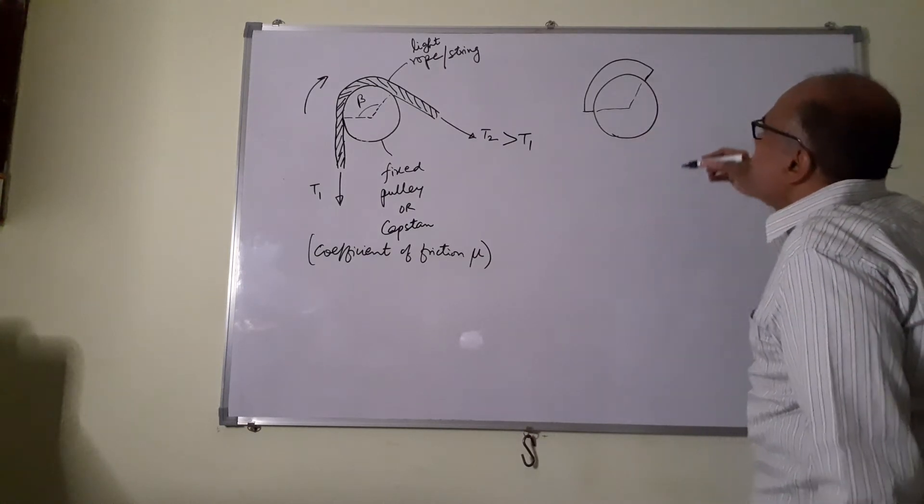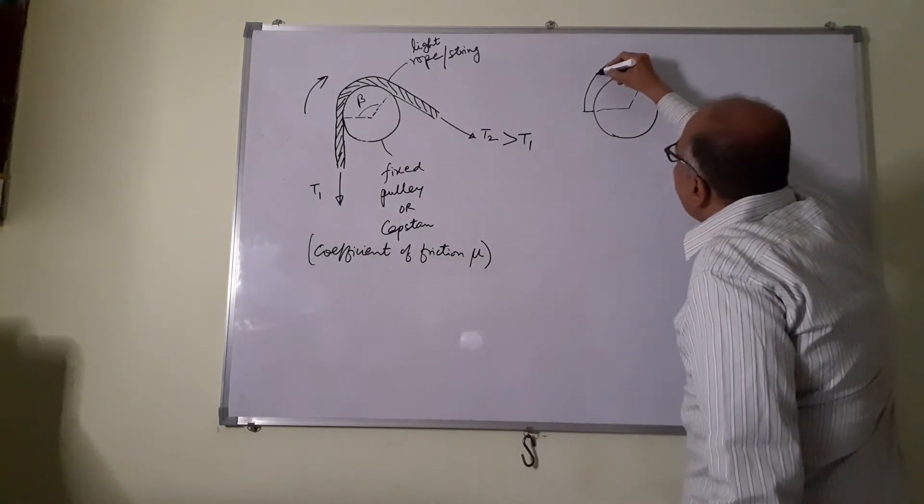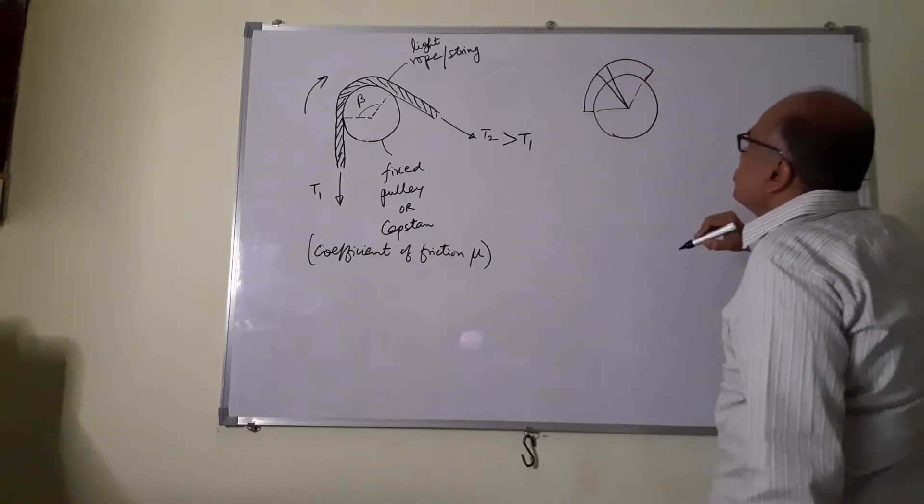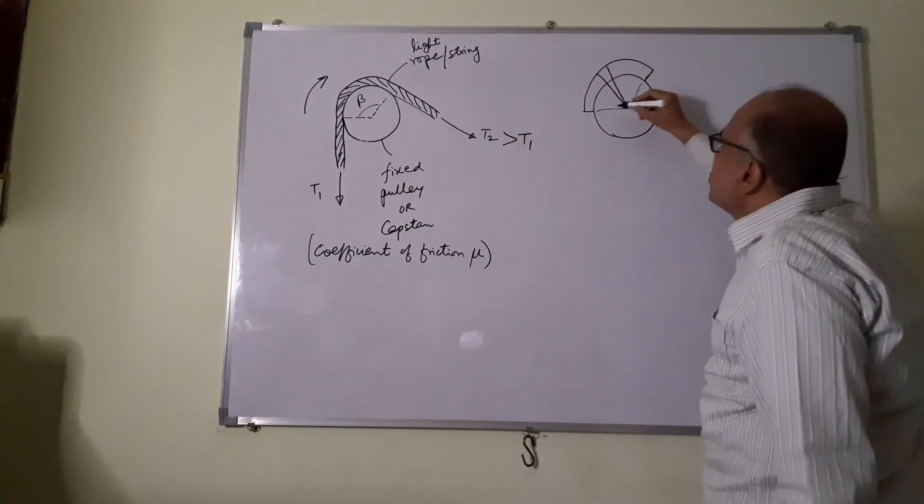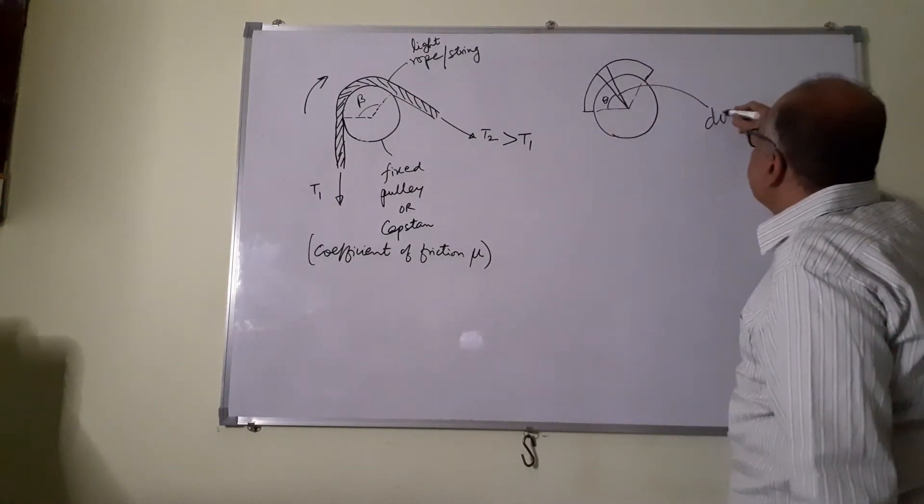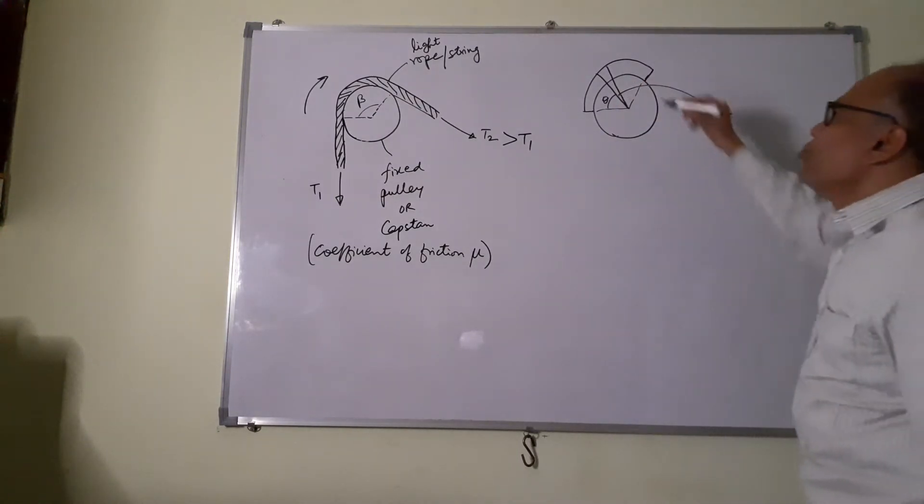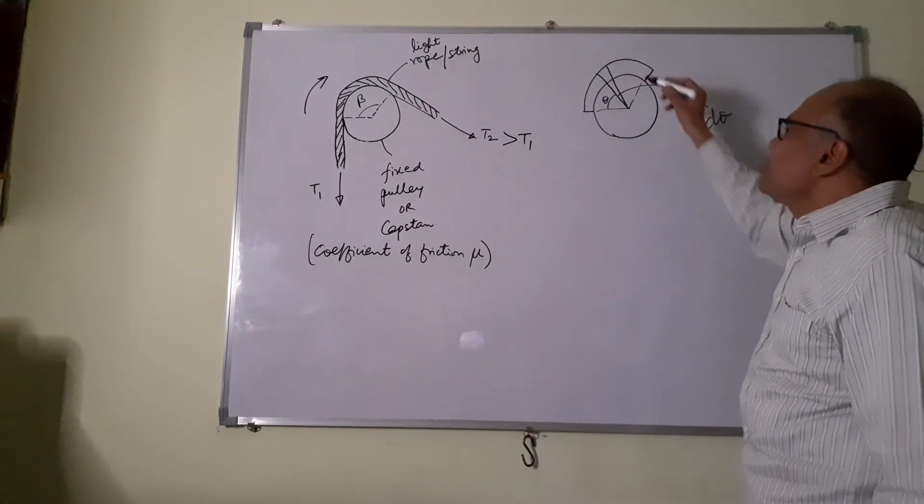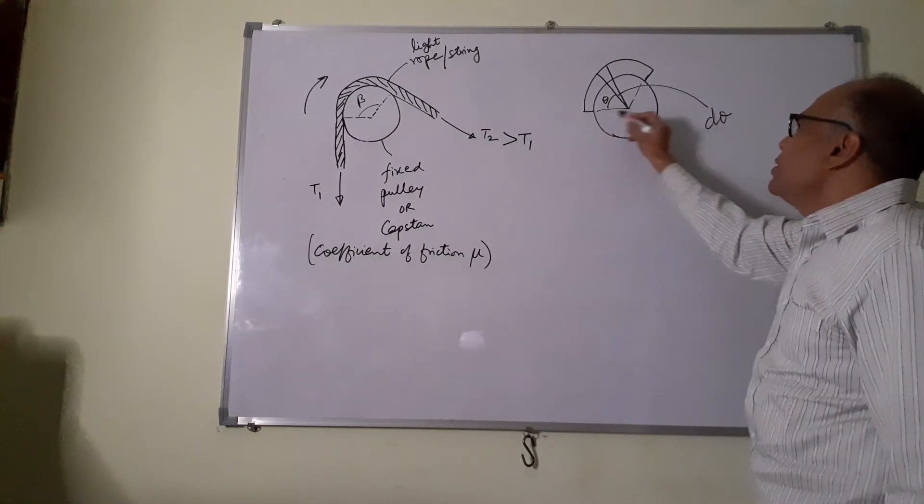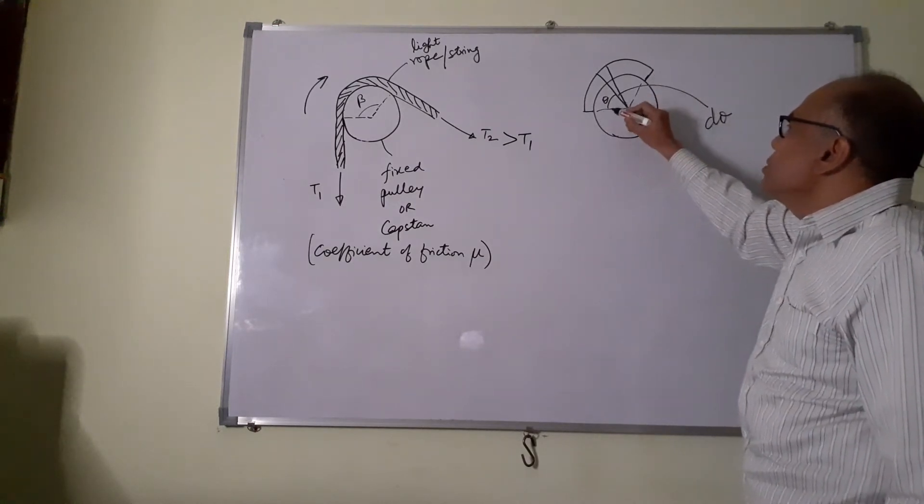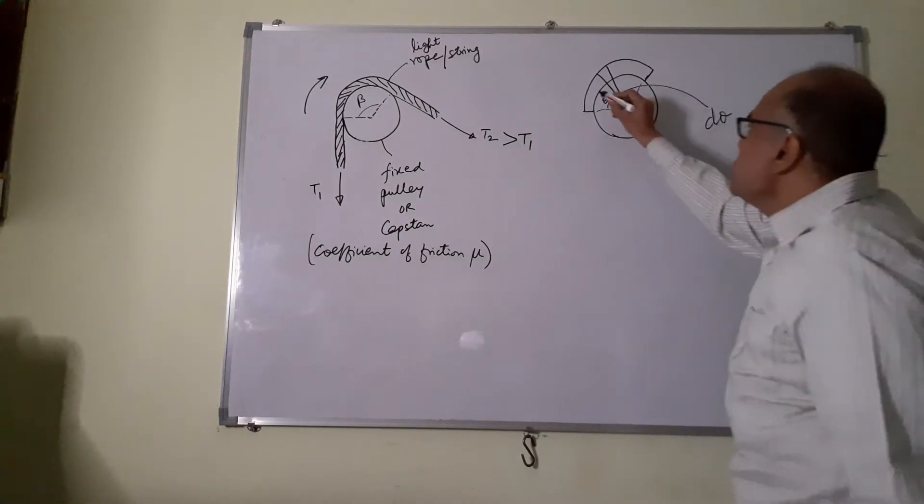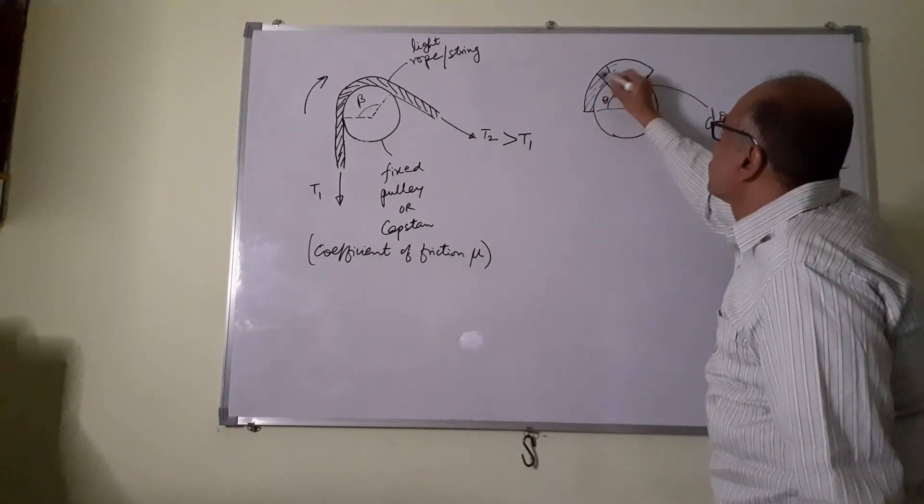So, separating angle beta. This is the angle beta. Now what I am going to do is I am going to take a small element of the rope. This is theta and this angle is theta. So I have a small element, an infinitely small element of the rope. This entire angle is beta. This theta is not general theta. This is the rope over it.